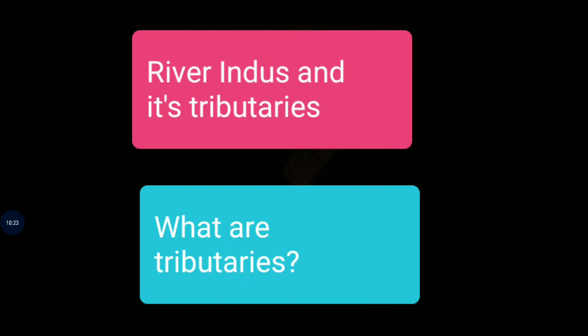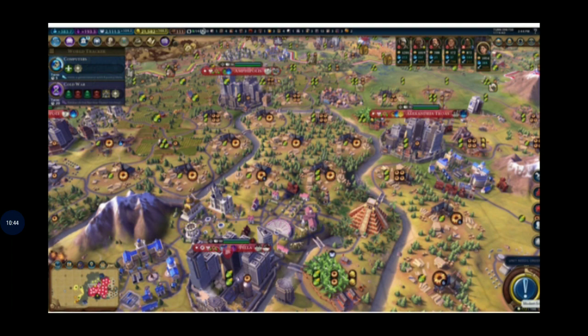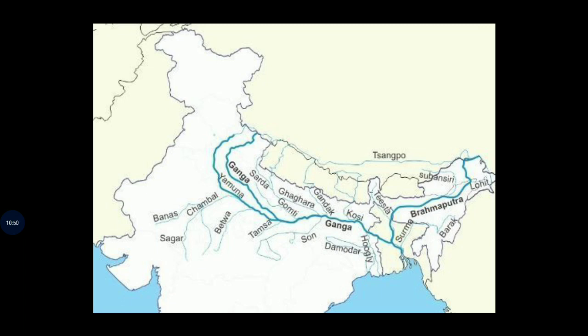River Indus and its tributaries — tributaries are smaller rivers that flow into a larger river and make it even larger. About 4,700 years ago, cities developed and started coming into existence. Later on, about 2,500 years ago, cities developed on the banks of the Ganga and its tributaries. You can see the river Ganga and its tributaries on the map.